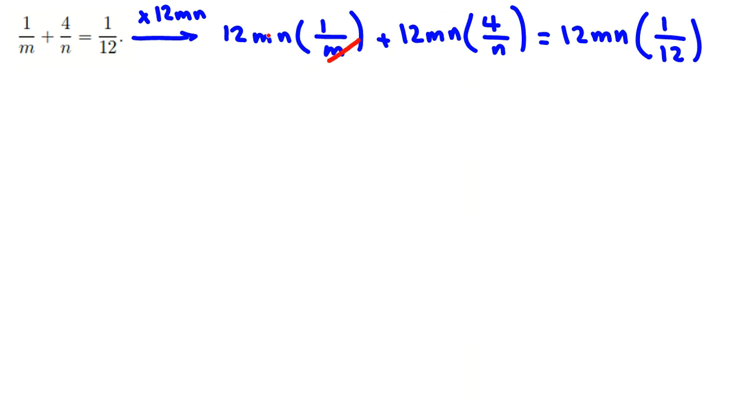So here if we simplify, m will be canceled and n will be canceled. Here 12 and 12 will be canceled.